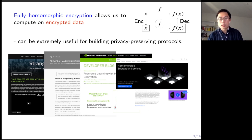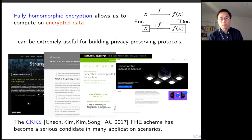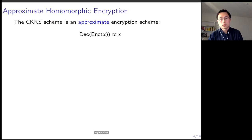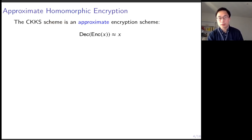One of the schemes, the CKKS scheme, has become a very popular and serious candidate in many of these applications. So what is the CKKS scheme? It is a special kind of homomorphic encryption scheme — an approximate homomorphic encryption scheme. What this means is that the decryption function on an encryption of X does not return X exactly,